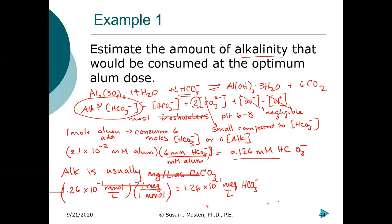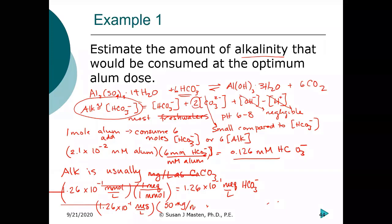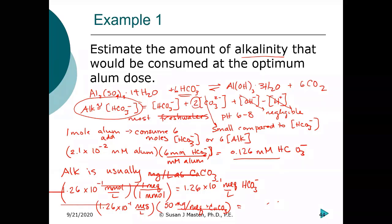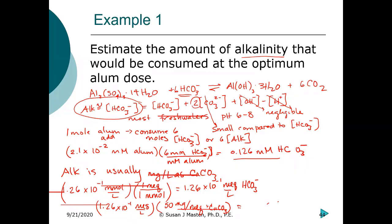We have 1.26×10⁻¹ milliequivalents per liter of bicarbonate concentration. There are 50 milligrams per milliequivalent of calcium carbonate. There is a video I produced for 4.480 on hardness and alkalinity on my YouTube channel that goes through all of these calculations in much more detail. If you haven't done these types of calculations in a while or don't remember this from 280, that video is there — you might want to take a look at it.